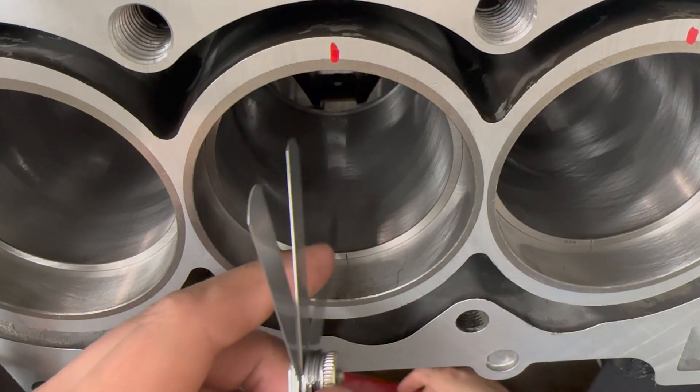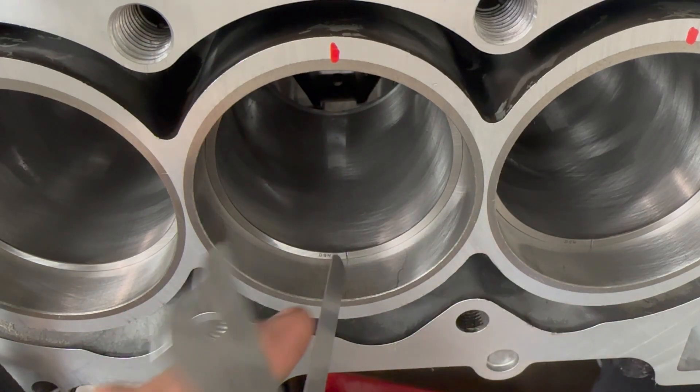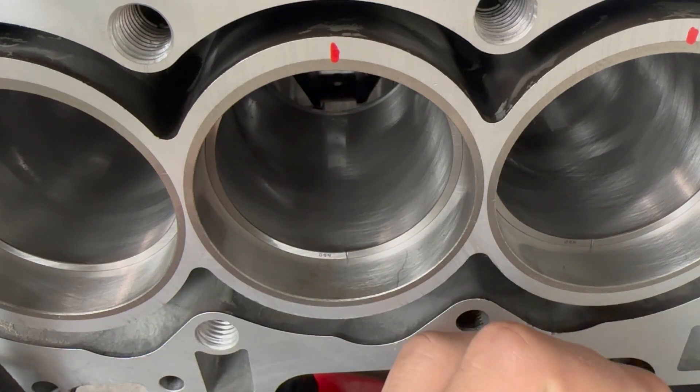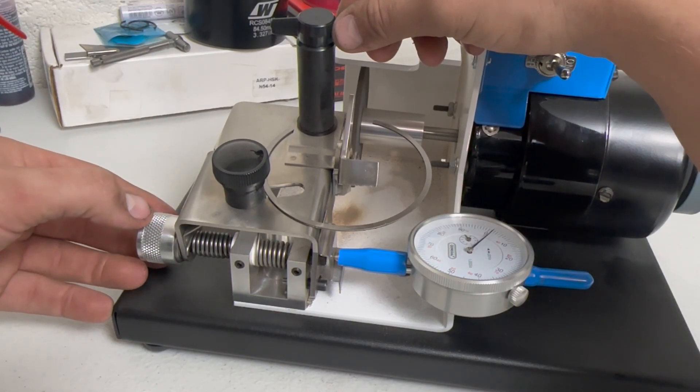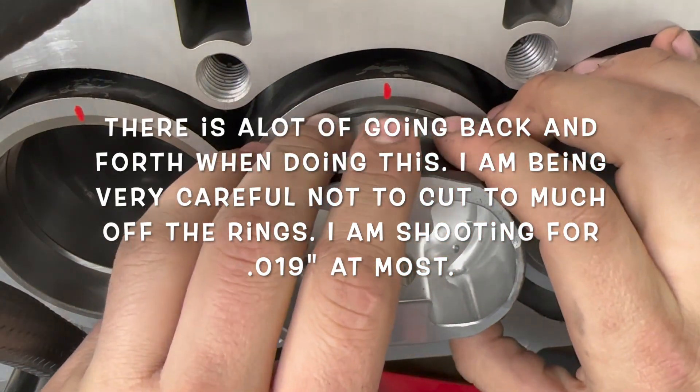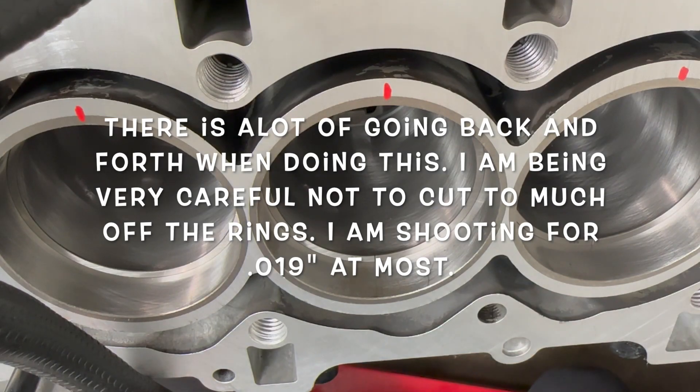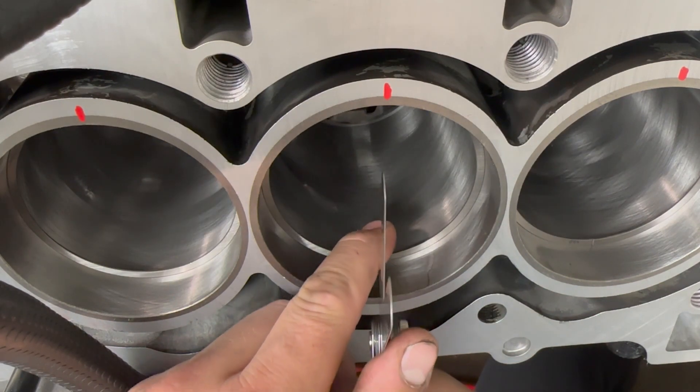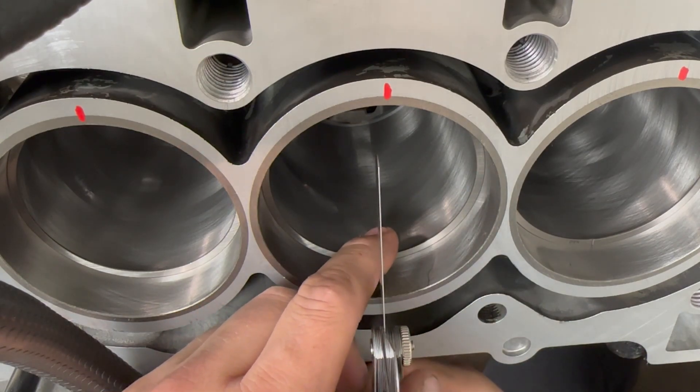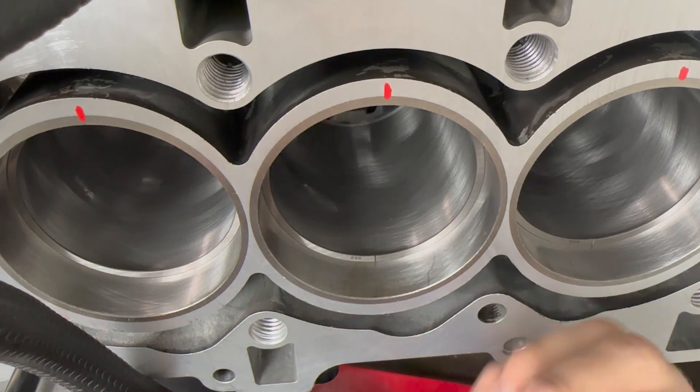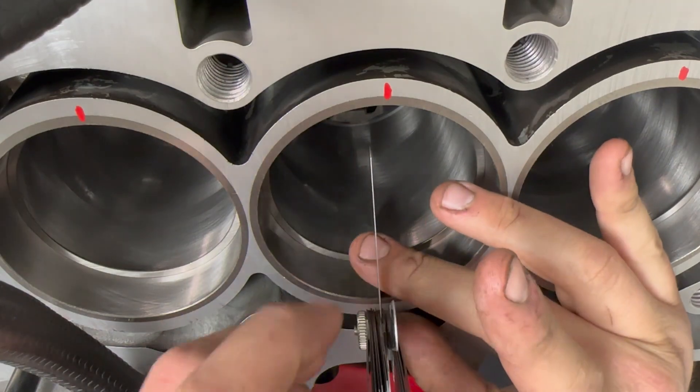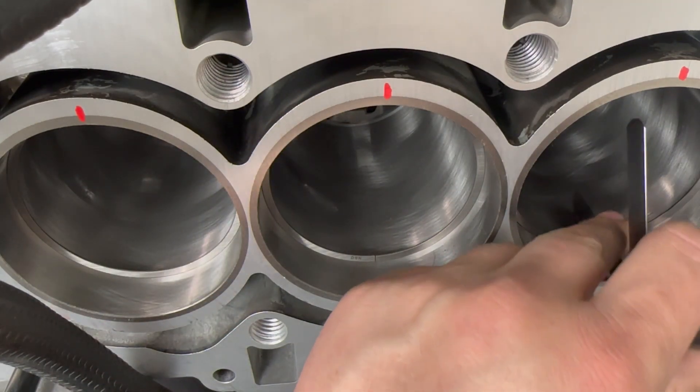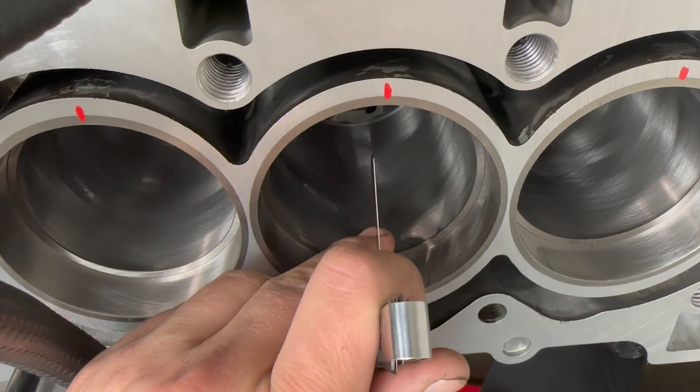I'm going to try 18, so 18 doesn't fit, so try 17. 17 fits. So I'm going to take like another thou off of this. Is the 18 going to fit? So 17 fits easy, the 18, like these feeler gauges are kind of weird sometimes. So it's definitely in there. I don't like how tight it is though, because it fits into this one nice, it's a little bit tighter on this one.